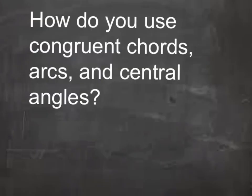We have now discussed various definitions with circles, chords, arcs, and central angles, as well as theorems, postulates, and four examples. So how do you use congruent chords, arcs, and central angles to find missing arc lengths or chord sides? The best way to answer this is to paraphrase the theorems, definitions, and postulates discussed throughout the video — you can even draw diagrams to illustrate your points. Review your notes repeatedly, practice the examples, and bring any questions to class.